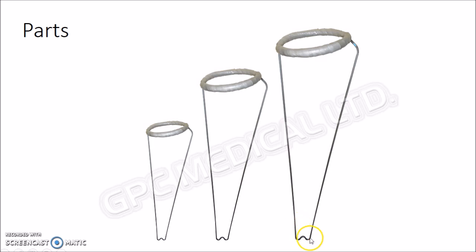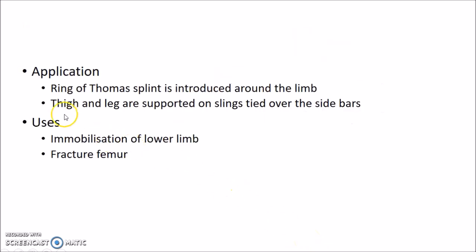This part is called the notch of the Thomas splint. The ring of the Thomas splint is introduced around the limb, then the thigh and leg are supported on slings tied over the sidebars.